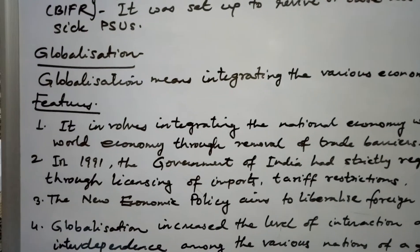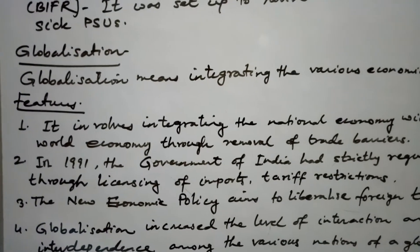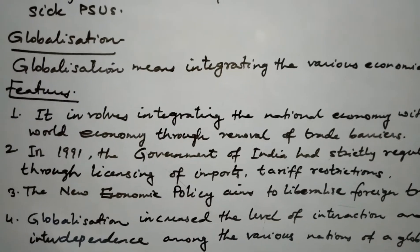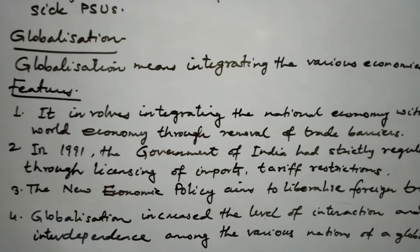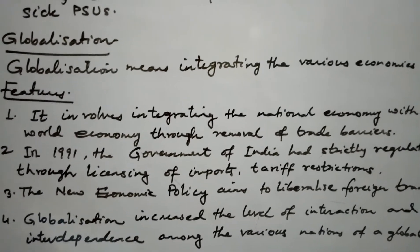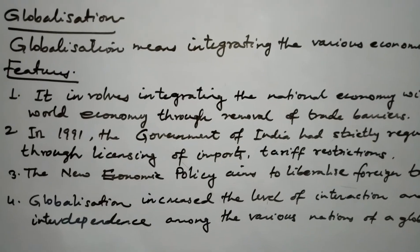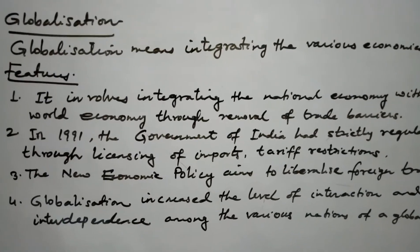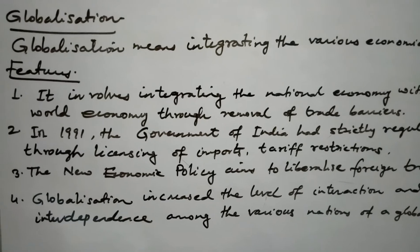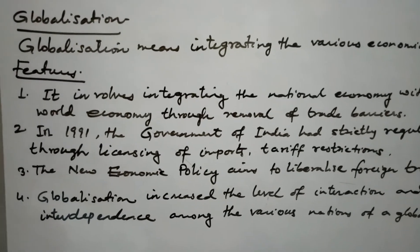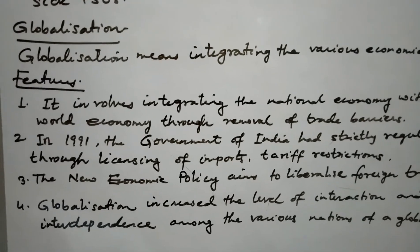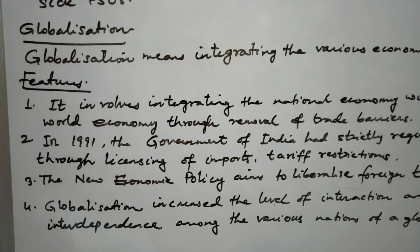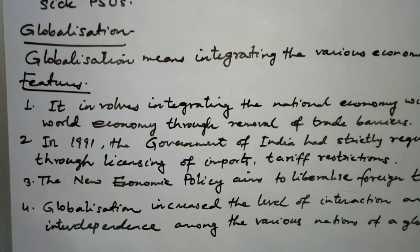An economy is truly globalized when it has the following features: first, free flow of goods and services across nations; second, free flow of capital across nations; third, free flow of information and technology across borders; fourth, free movement of people across borders; and fifth, a common government perspective where different countries open their markets to each other. Only then can we say that an economy is truly globalized.